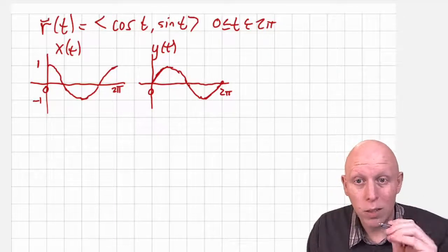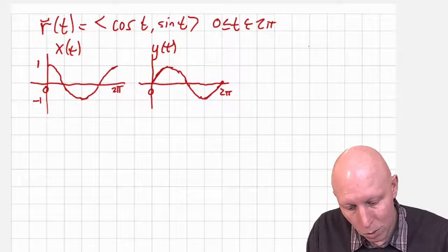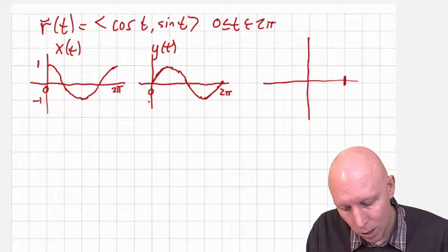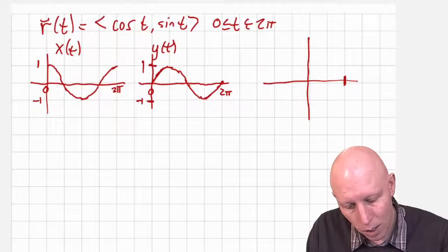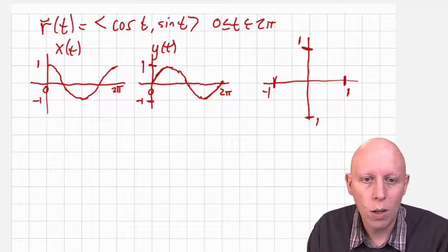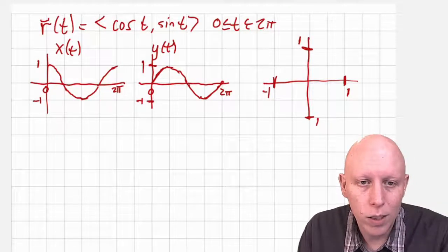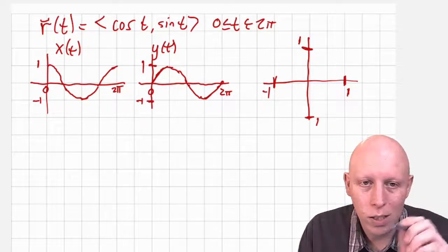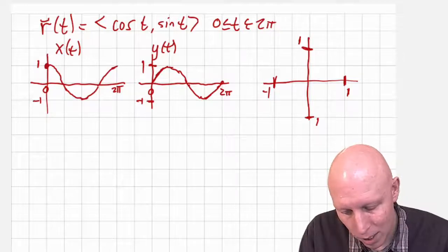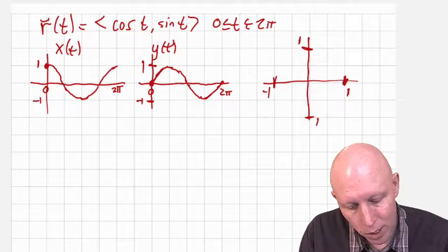Now we want to combine those two functions into one function. The range of x of t and y of t are both from negative one to one, so I'm going to create our axes where this is one, this is one, negative one, one. Let's follow what this curve does and see what happens. We start where x is one and y is zero — that's this point right here, when t is equal to zero.